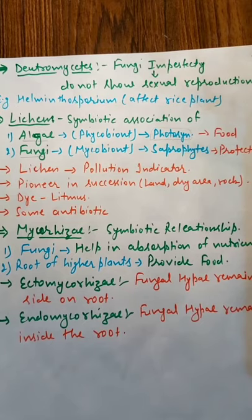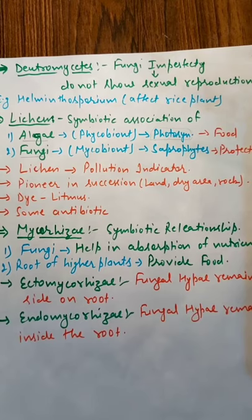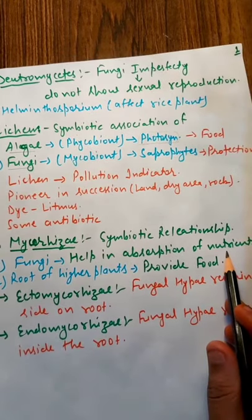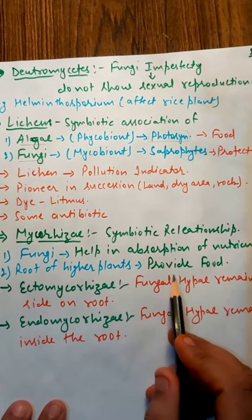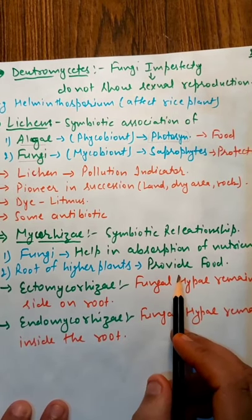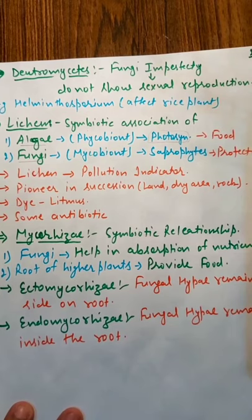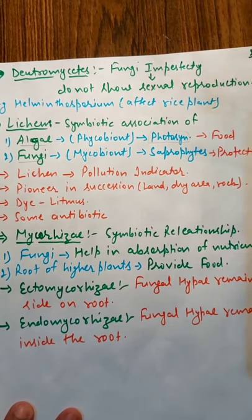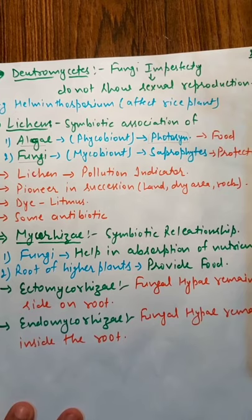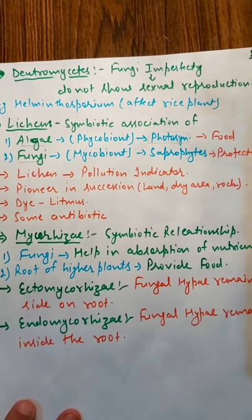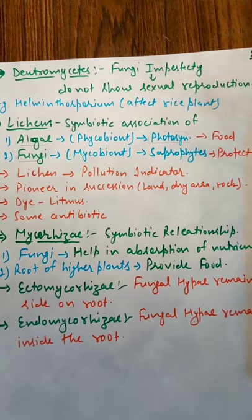Mycorrhizae is the symbiotic relationship between fungi and the roots of higher plants. Again, fungi will help in the absorption of nutrients and roots of higher plants will provide food because they are able to perform photosynthesis. The plant will be able to do photosynthesis and that prepared or synthesized food will be transferred to the root of higher plant. So here both will be benefited by this symbiotic relationship.